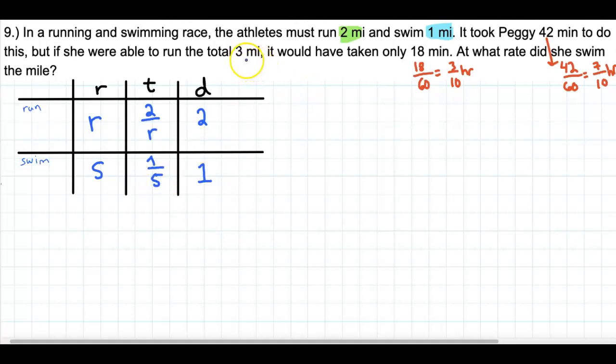But what we did know is that she can run 3 miles in 18 minutes. So we can find out what R is right away. Let's do that.